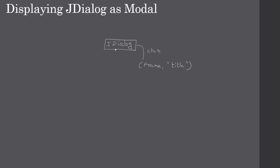Here we construct the JDialog and pass a parent to it — the parent can be a frame or another dialogue. We also provide a title for the dialogue as the second parameter. That's how we construct the dialogue. When the dialogue displays, it shows the title passed as the second parameter. Since we pass a frame as parent, closing the frame may also close the JDialog.